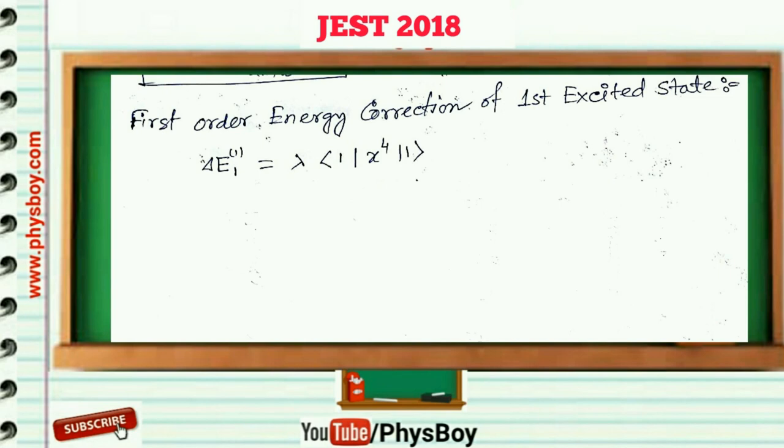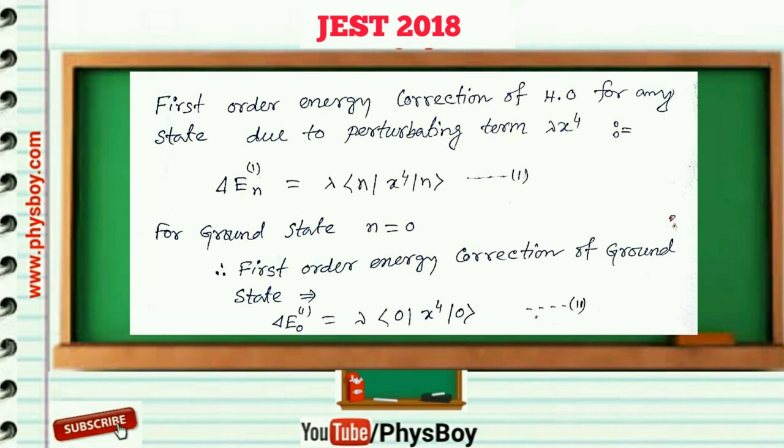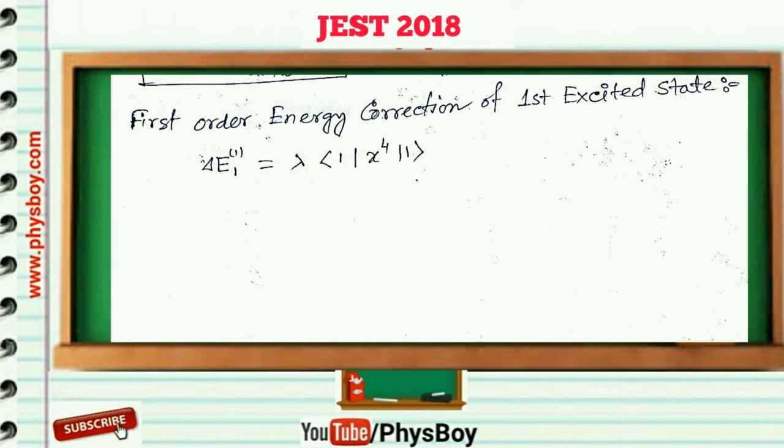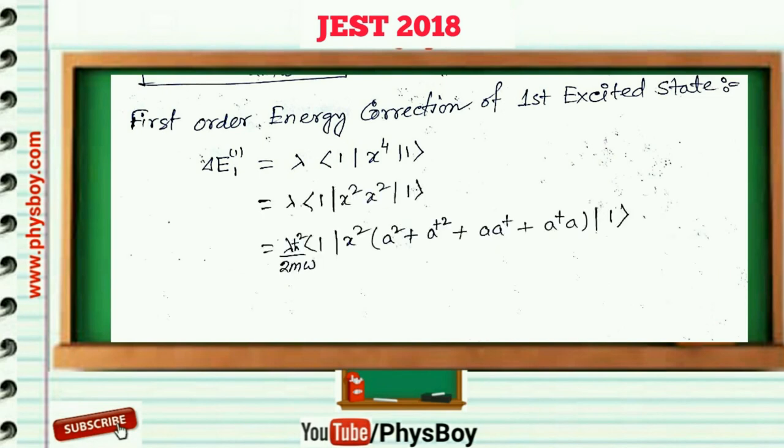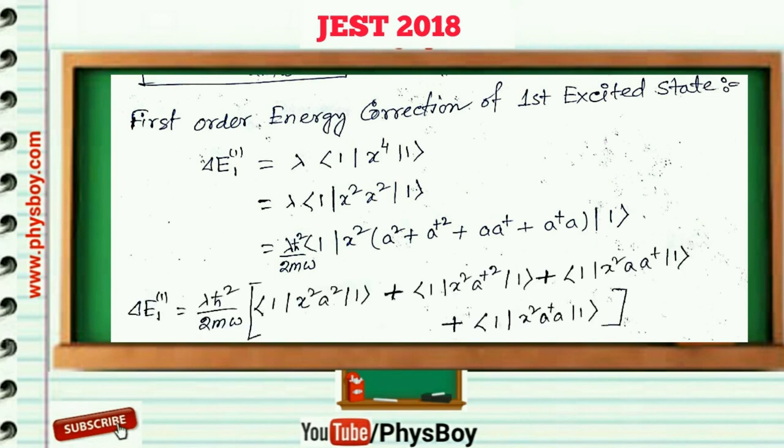For the first excited state n is equal to 1, so putting n equal to 1 in equation 1 gives delta-E1 equal to lambda bra-1 x to the power 4 ket-1, which equals lambda bra-1 x-squared times x-squared ket-1. Inserting the value of x-squared from the previous equation we again get four terms. If you operate the creation and annihilation operators on the first excited state and insert the matrix elements given in the question, you get three non-zero terms.